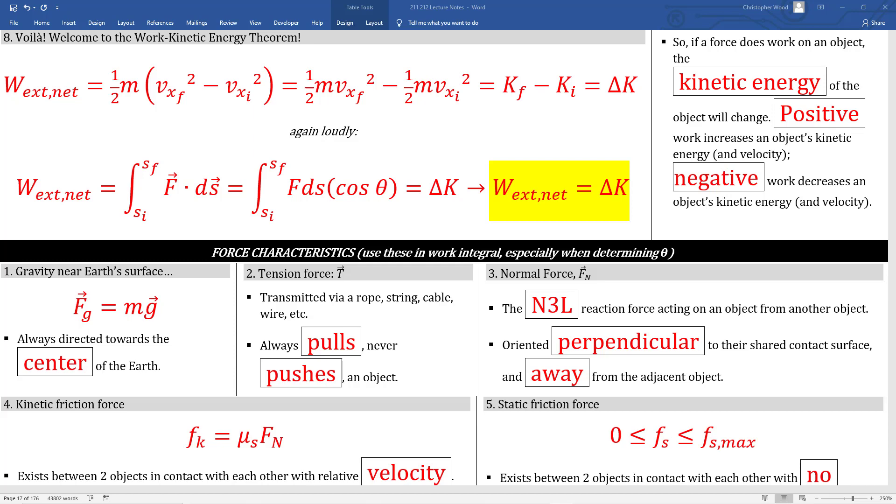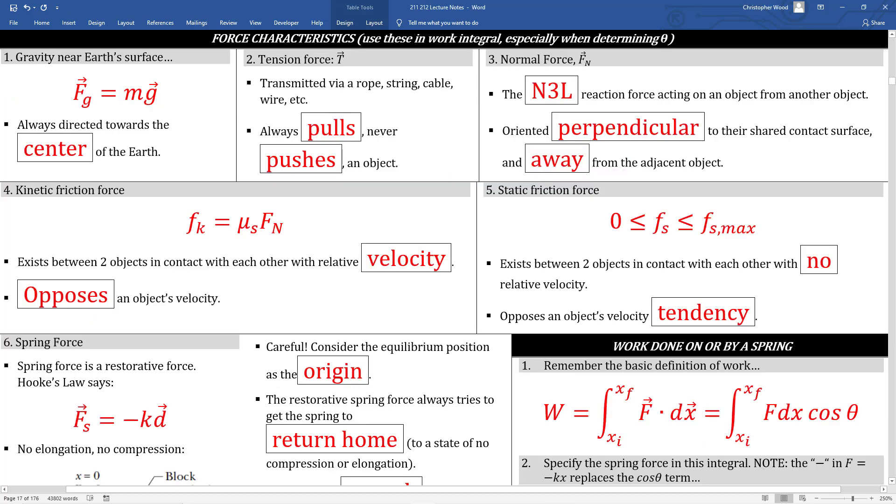Boxes 1 through 5 just recap some forces that we've already studied. All forces fall under the umbrella of Newton's first, second, and third laws. Similarly, all forces do work on an object if that object moves. So by now hopefully you're familiar with box number 1, the gravitational force. Box number 2, tension. Box 3, the normal force. Box 4, kinetic friction. And box 5, static friction.